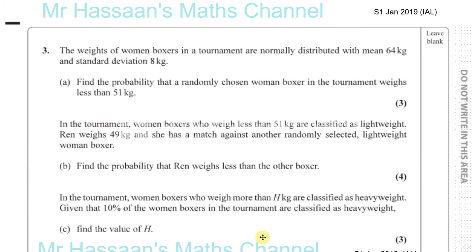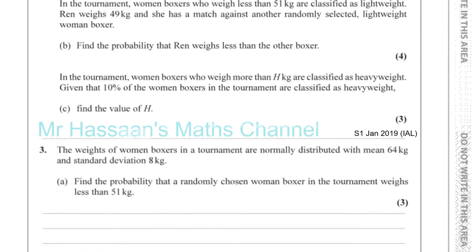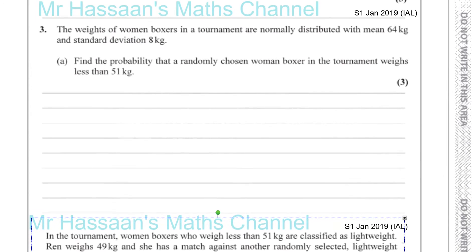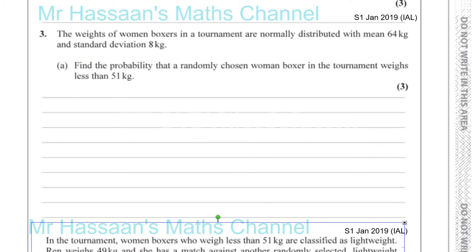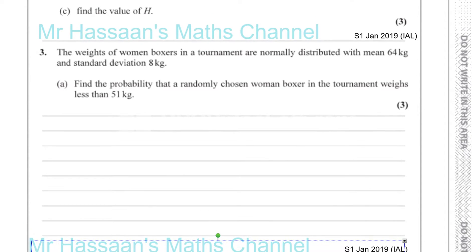Here we have a question from an S1 paper, S1 January 2019, Statistics One. This question is about normal distribution. It says the weights of women boxers in a tournament are normally distributed with a mean of 64 kilograms and a standard deviation of 8 kilograms.